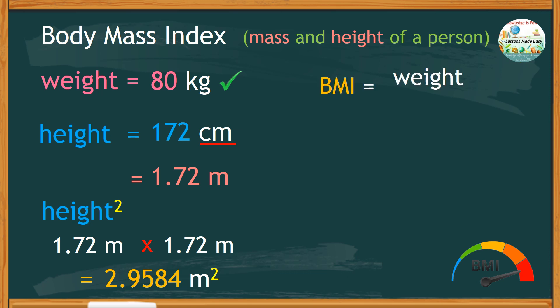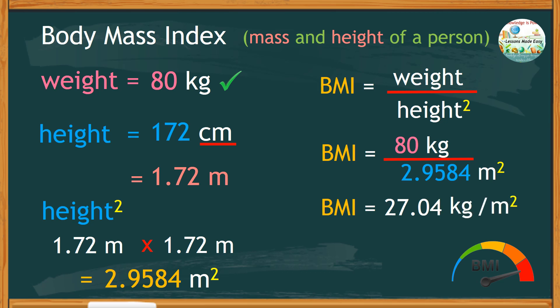take the weights divided by the square of the height. That is, 80 kilograms divided by 2.9584 square meters. This would give us a BMI that is rounded off to 27.04 kilograms per square meter.